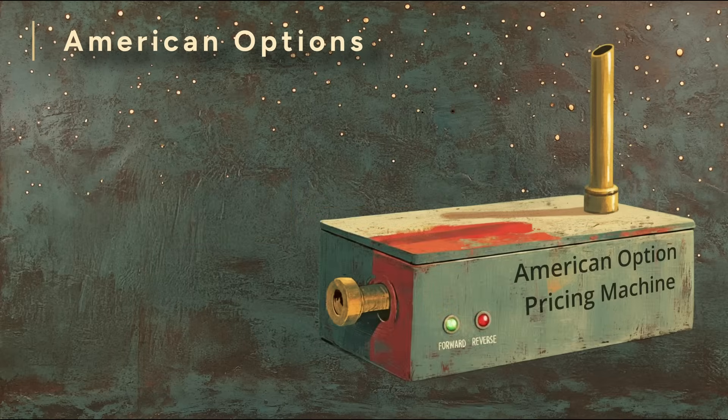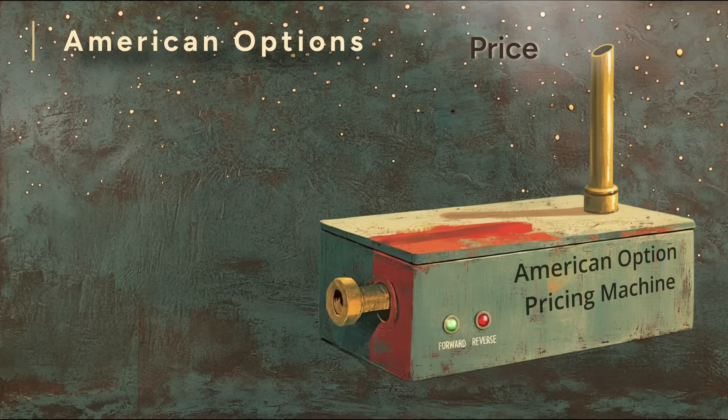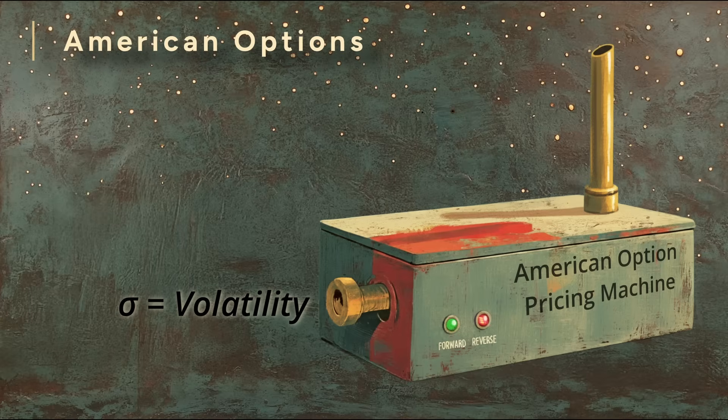Here's our American options pricing machine. It accepts the same inputs as the Black-Scholes equation and spits out the price. We can reverse this process by inserting the market price for the stock option. We then solve to find what the corresponding volatility needs to be. This value is the implied volatility.